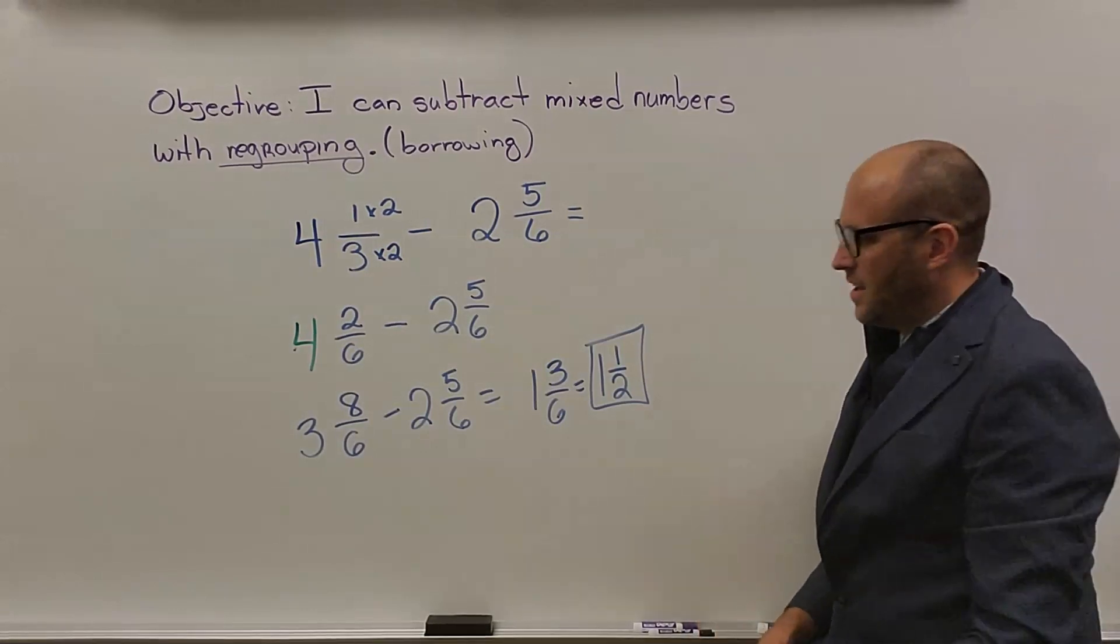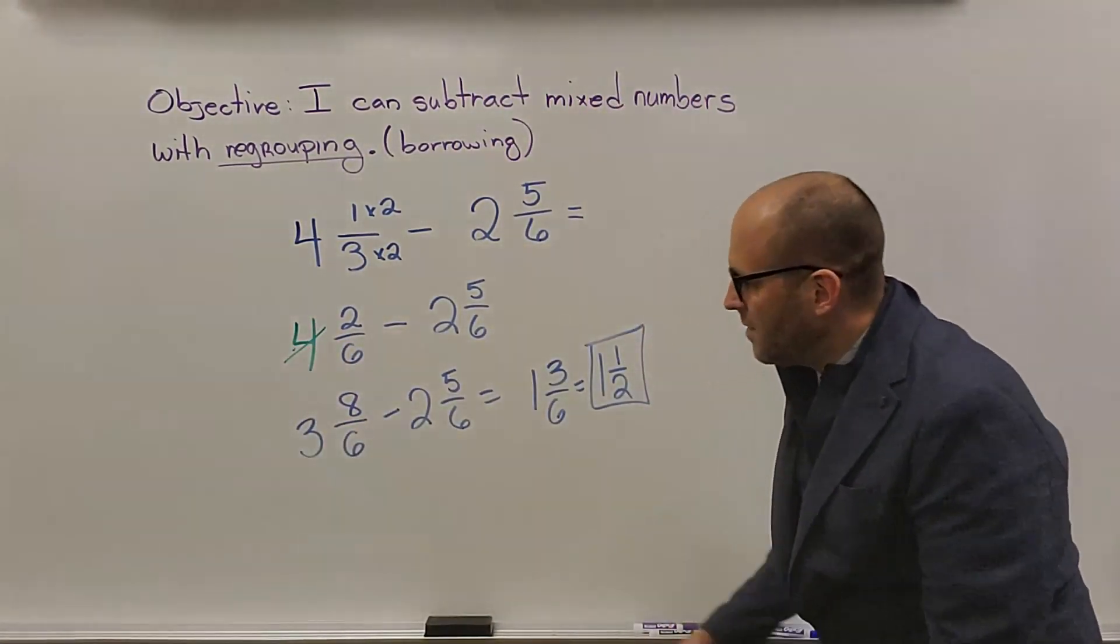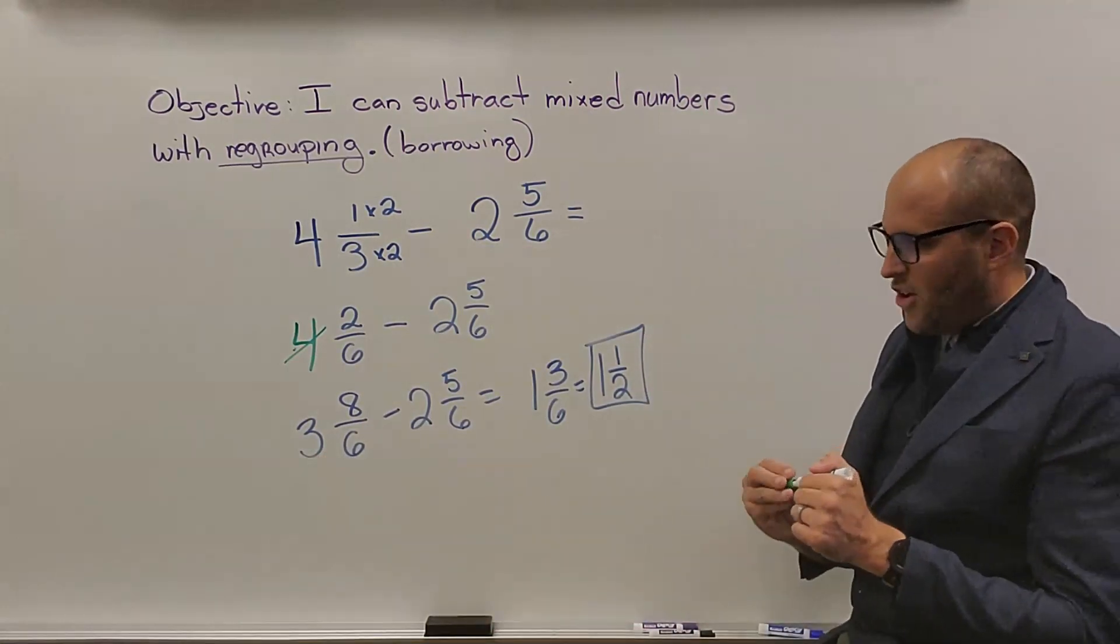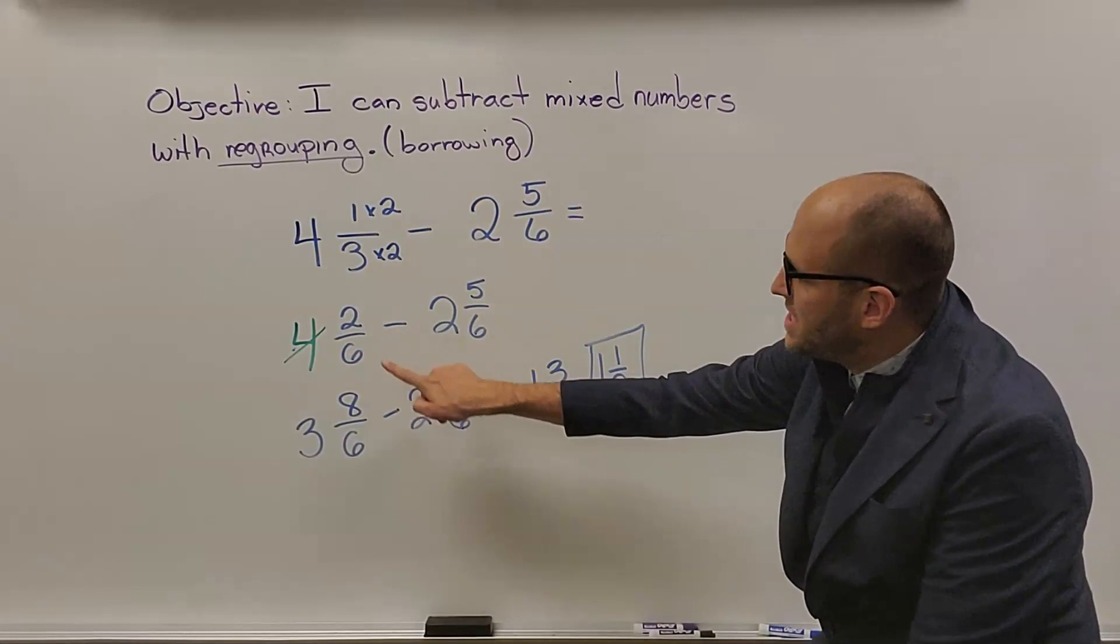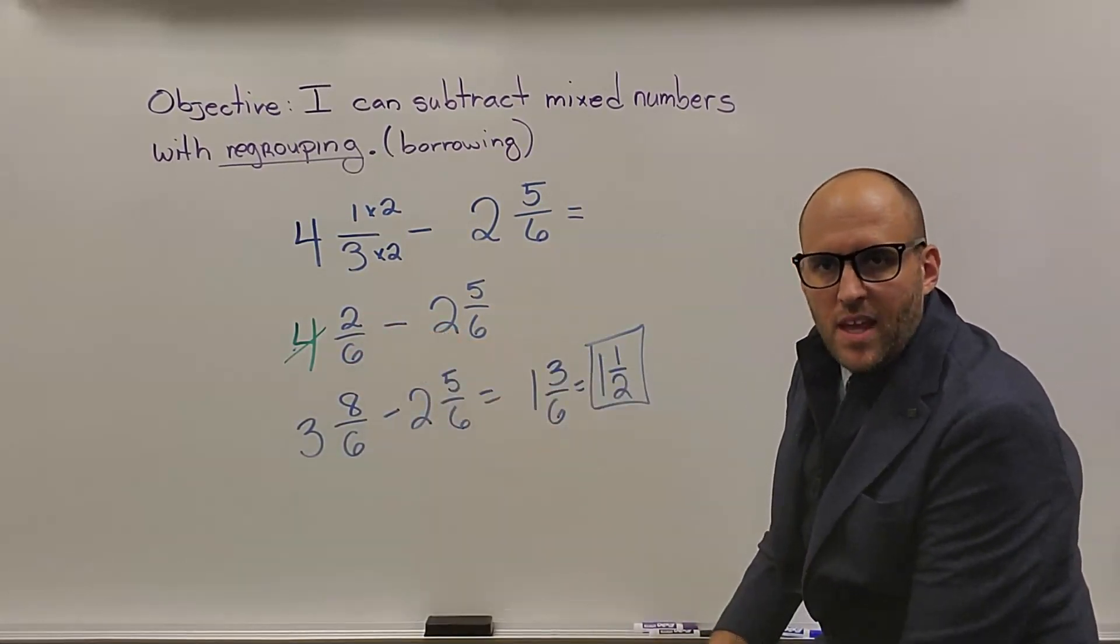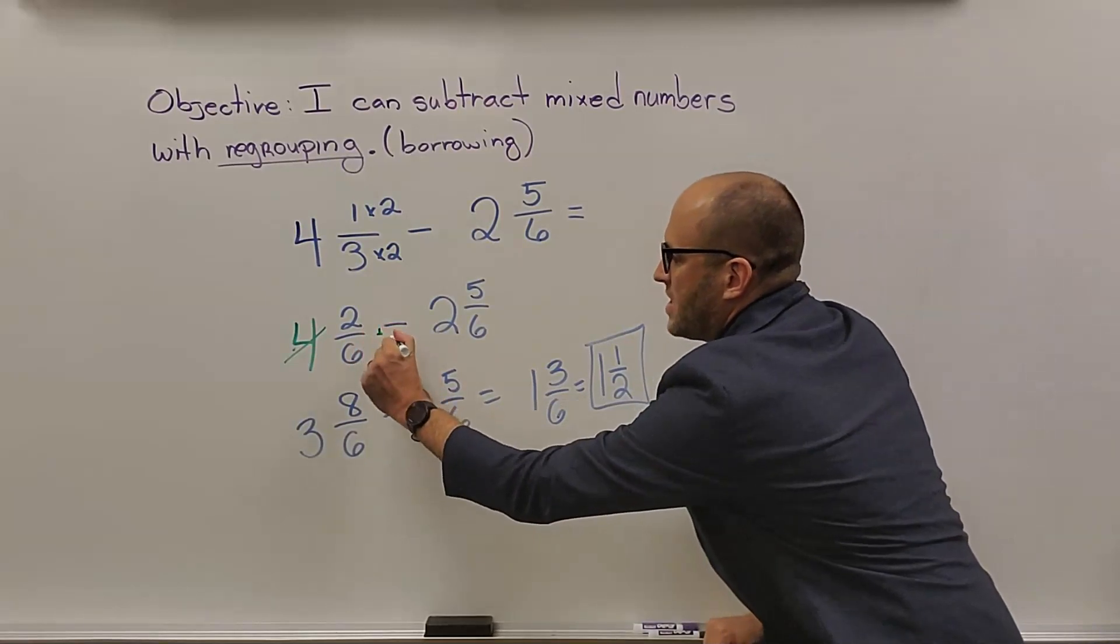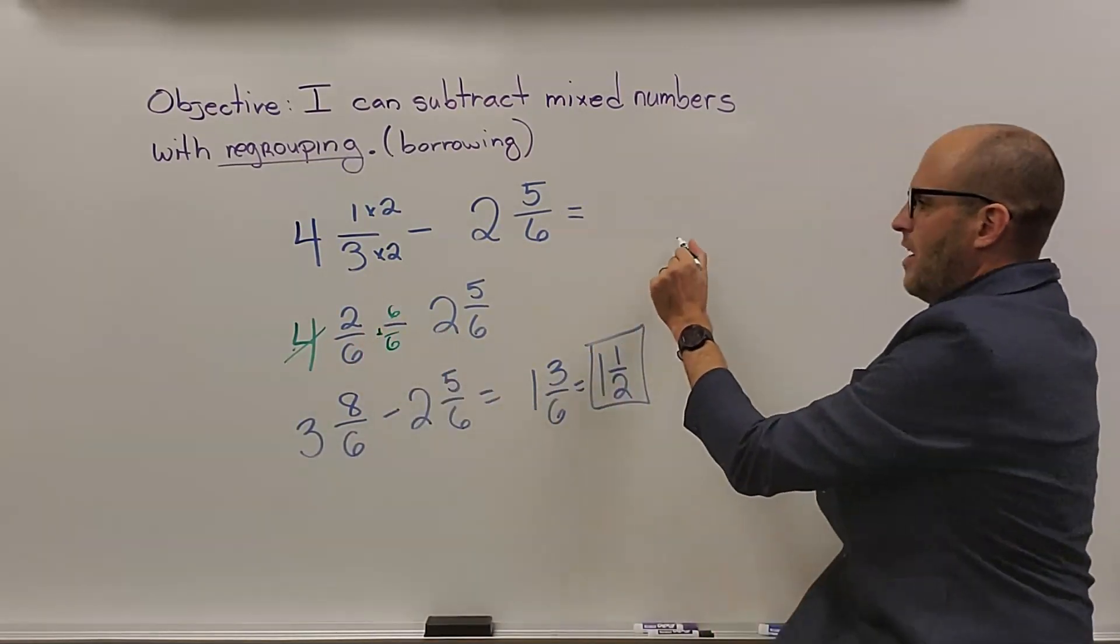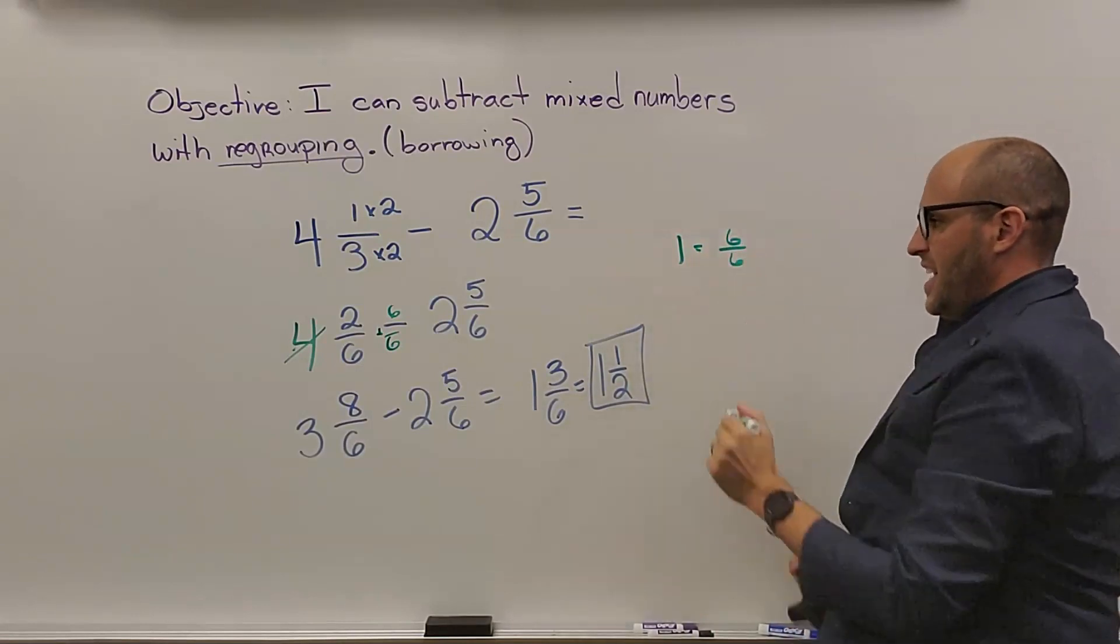How you borrow is just like you start with. You take 1 away from the 4 and you make it a 3. However, your fraction is out of 6. So this doesn't become a 12. It becomes an 8 because you're adding another 6 to it. Remember, you're adding 1 and 1 in this problem is 6 over 6.